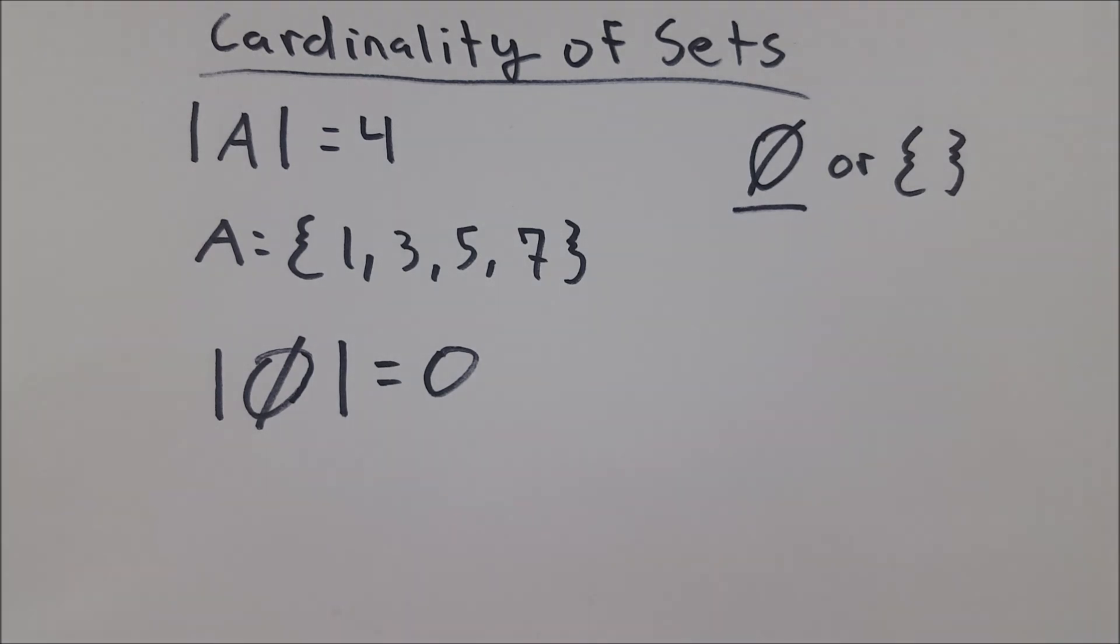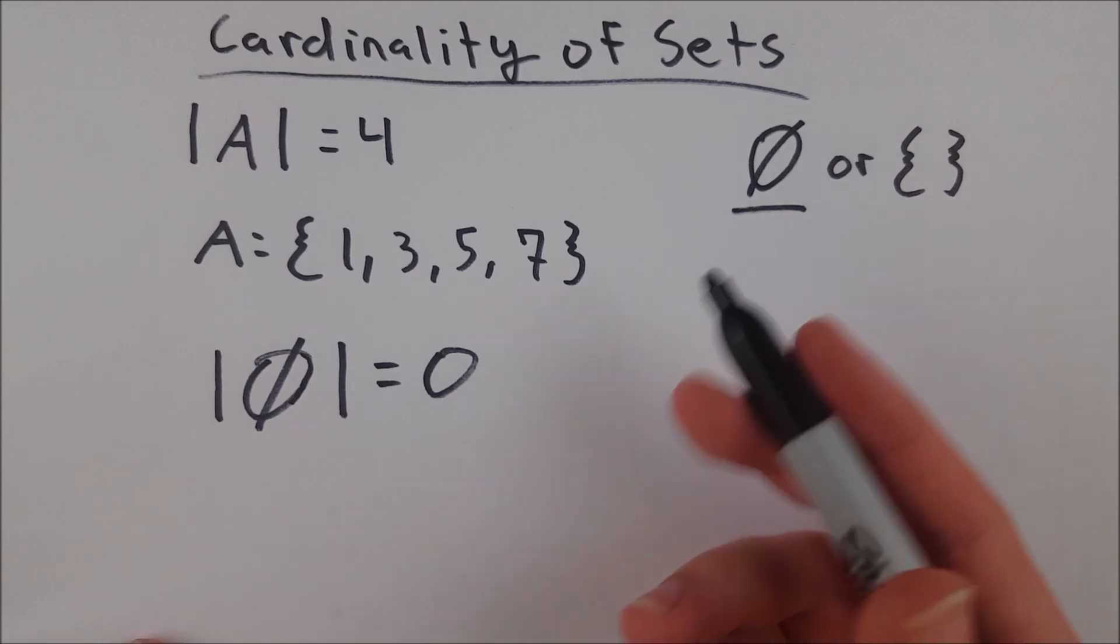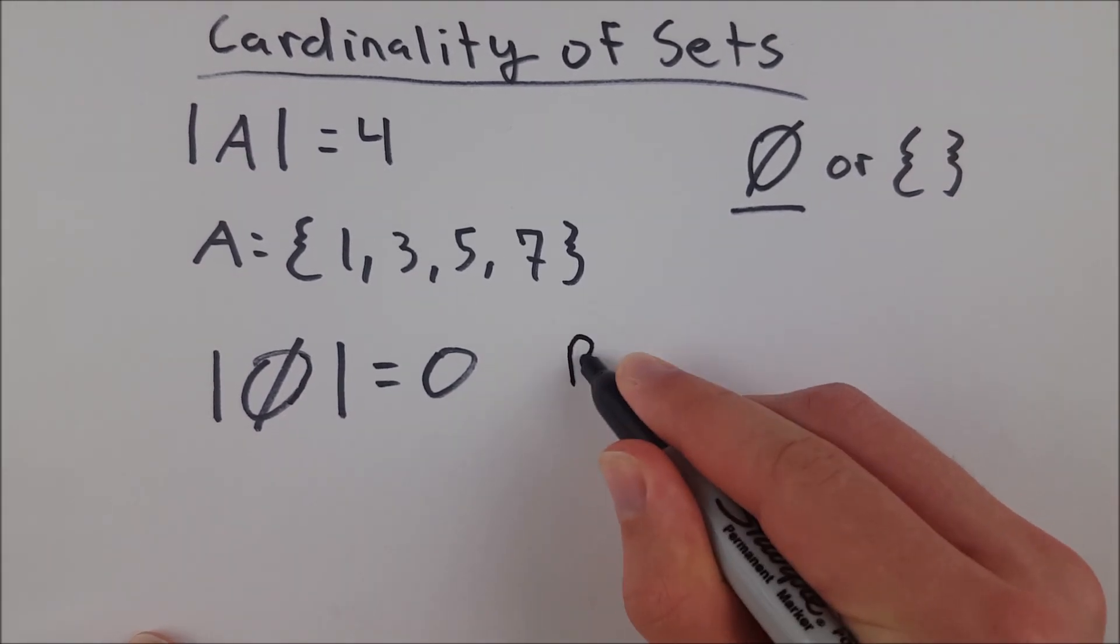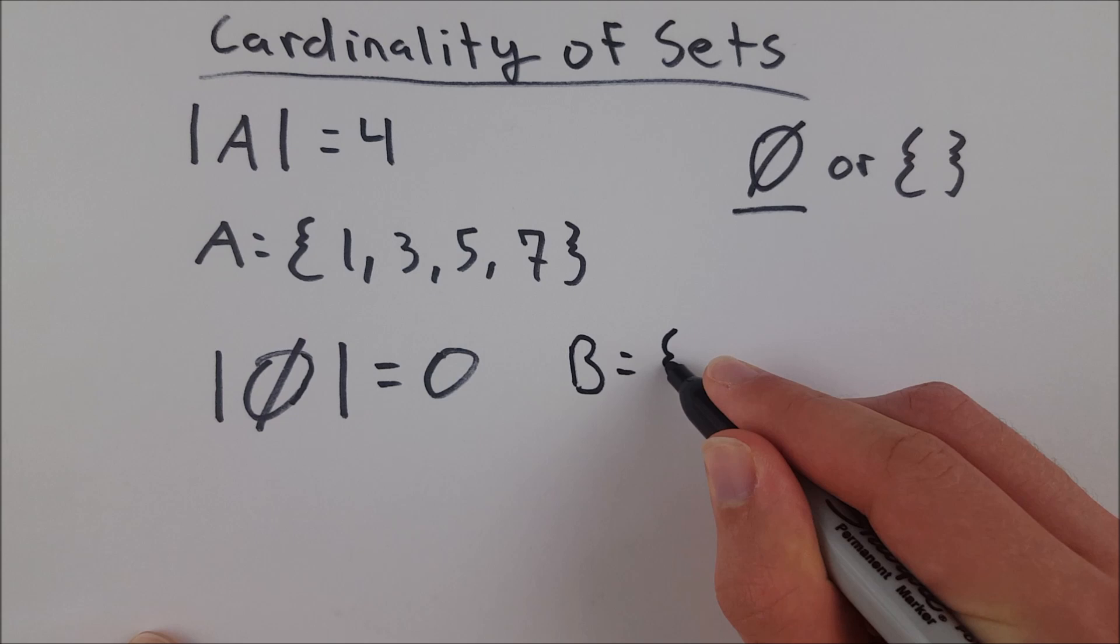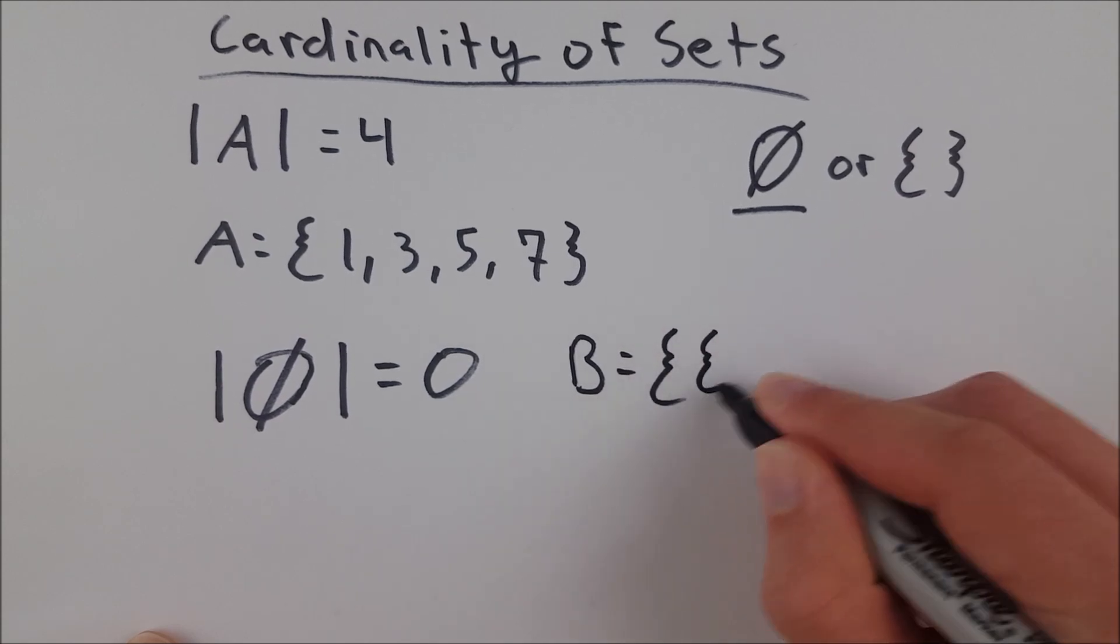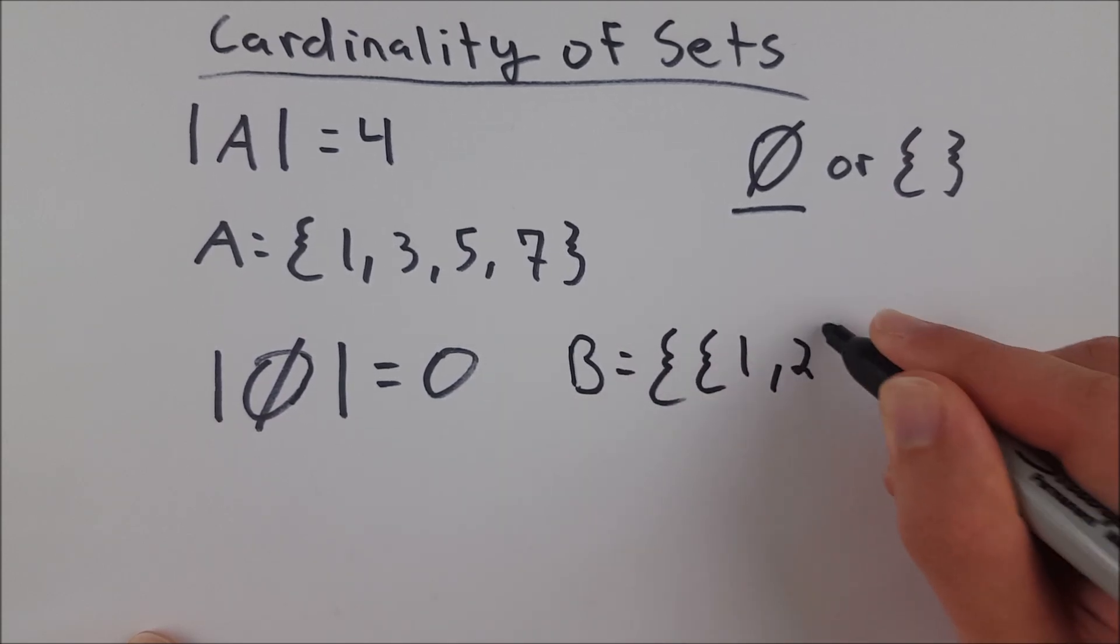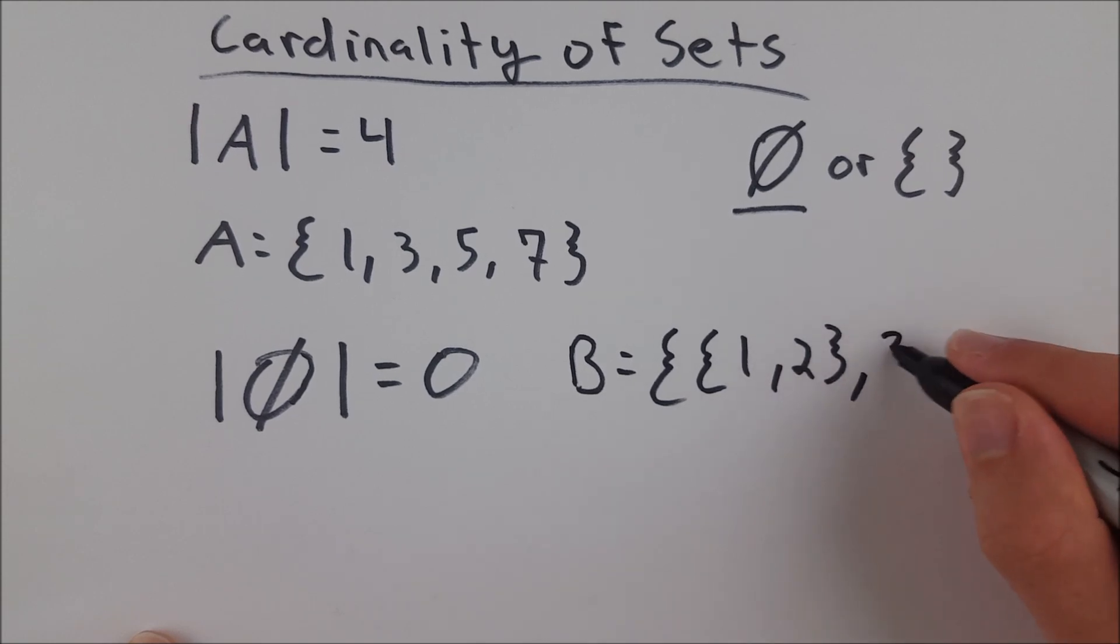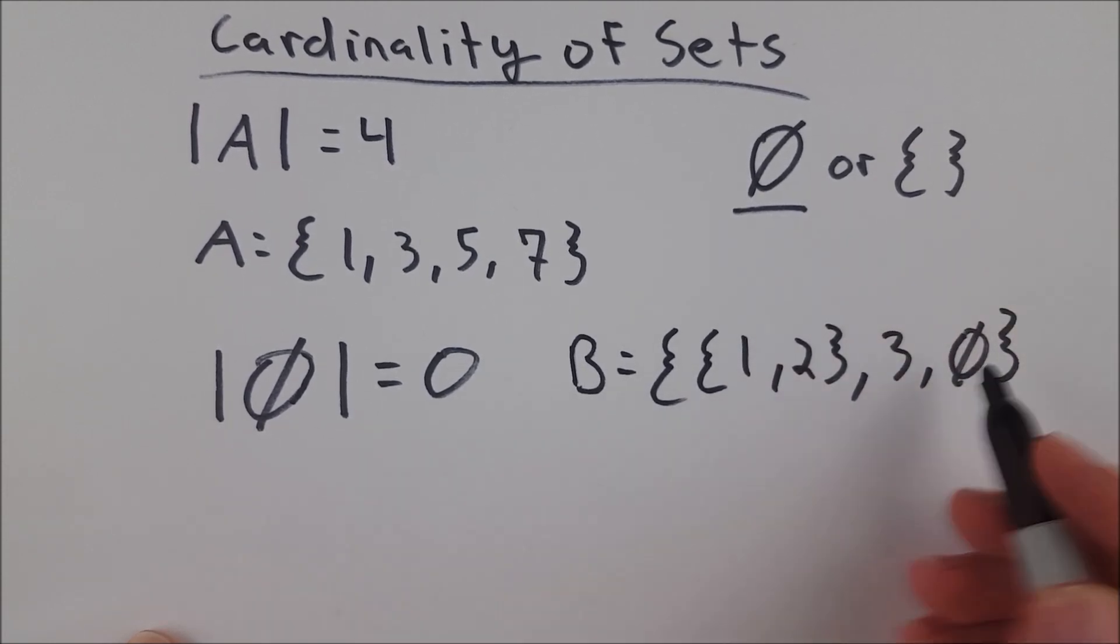The only tricky part of cardinality for people that I found in teaching it is when you get into cases where you have, say, a set B and there are sets in the set. So let's say set B has this set containing 1 and 2 and it's got 3. Let's say it has the empty set. What's the cardinality of this set?